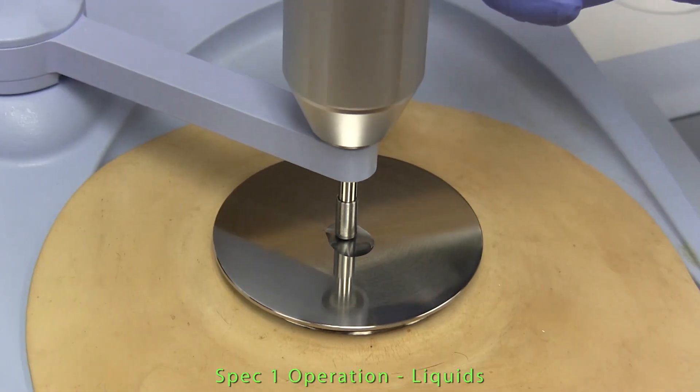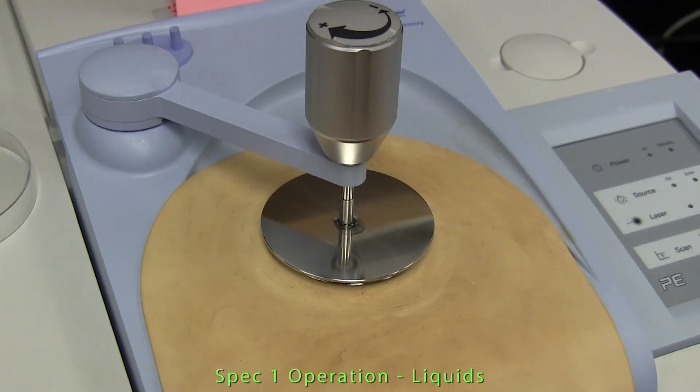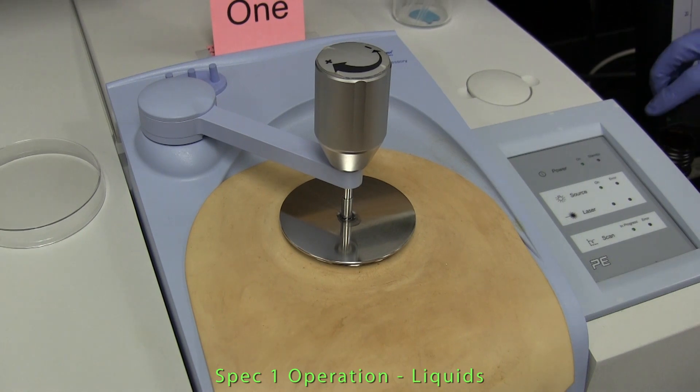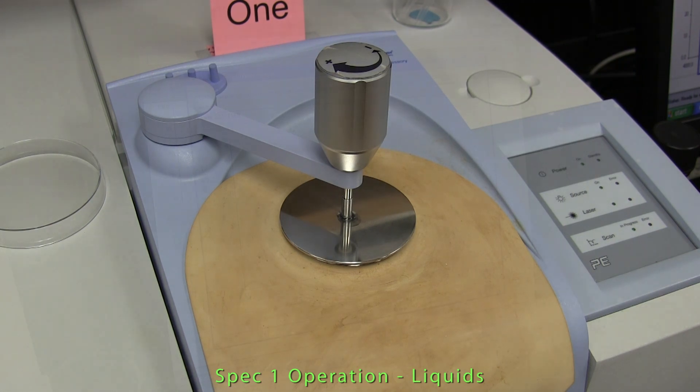No additional pressure is needed with liquid since there is good contact between the crystal and the liquid, but we still place the pressure arm over the top of the sample in this way so as to prevent or slow down evaporation of more volatile liquids from the surface of the crystal.